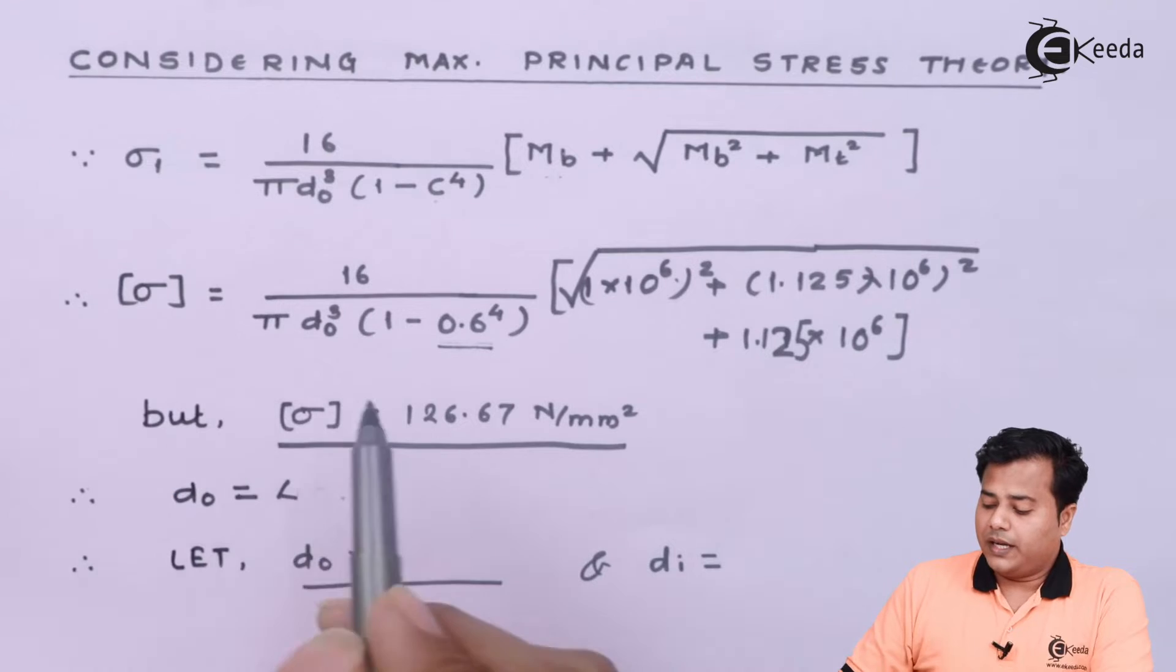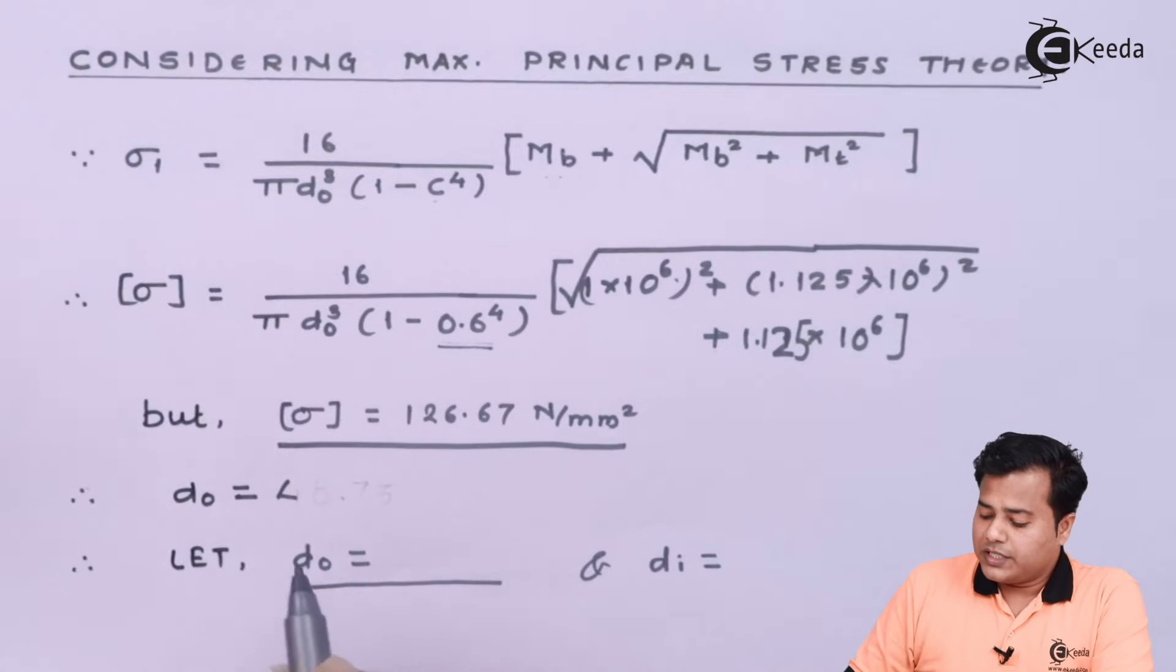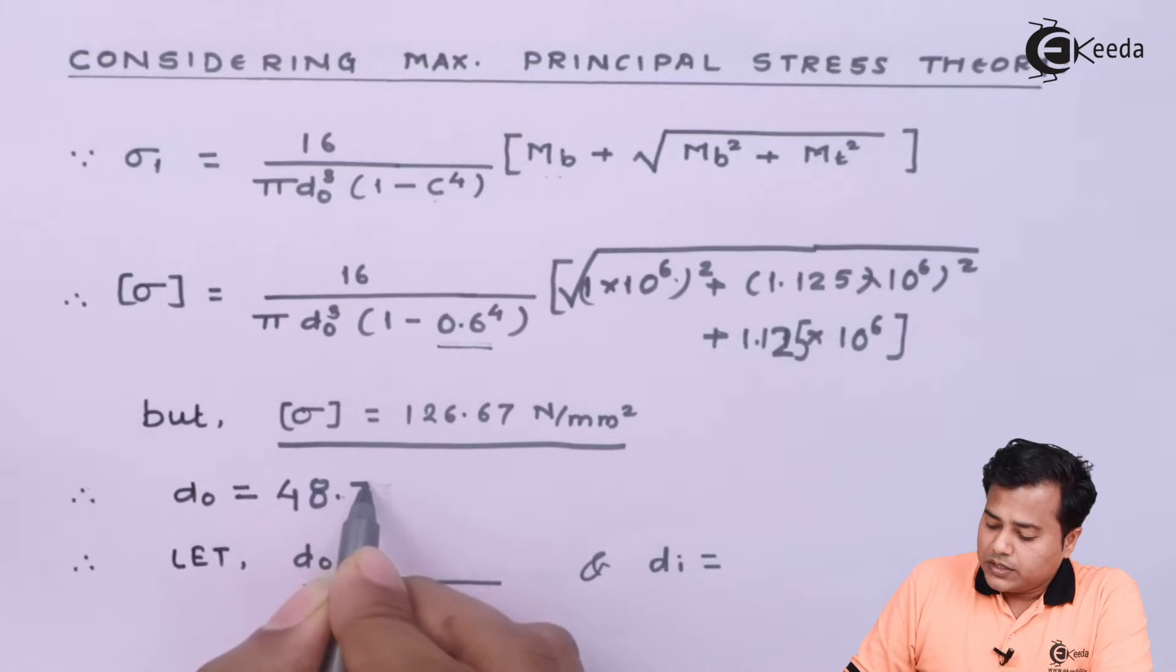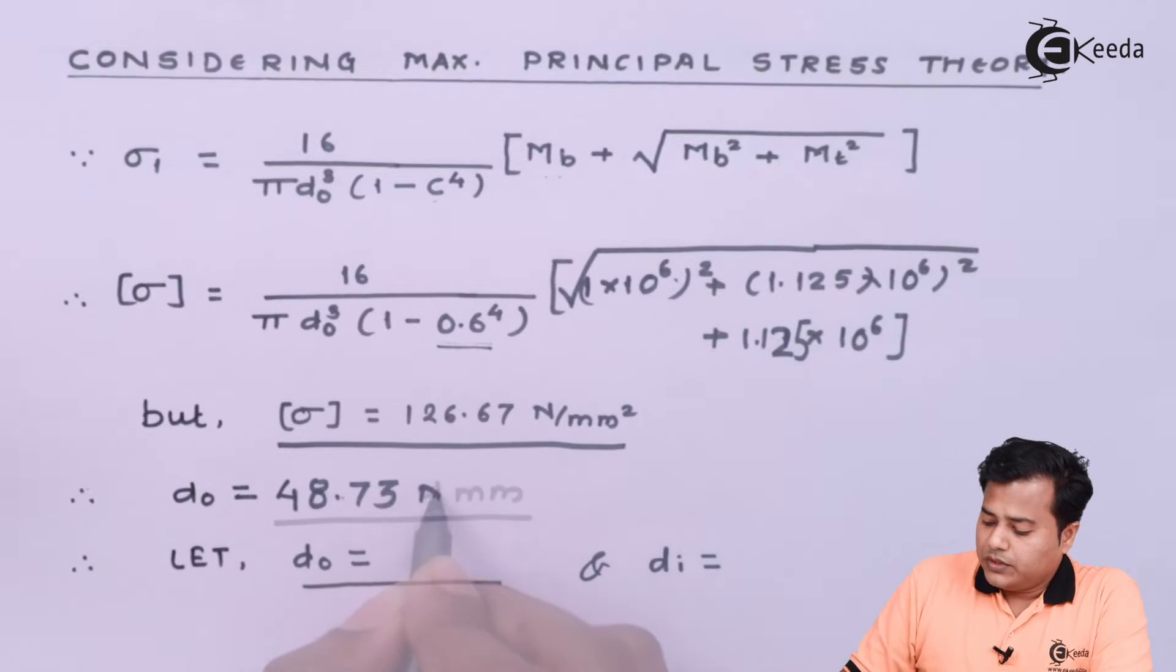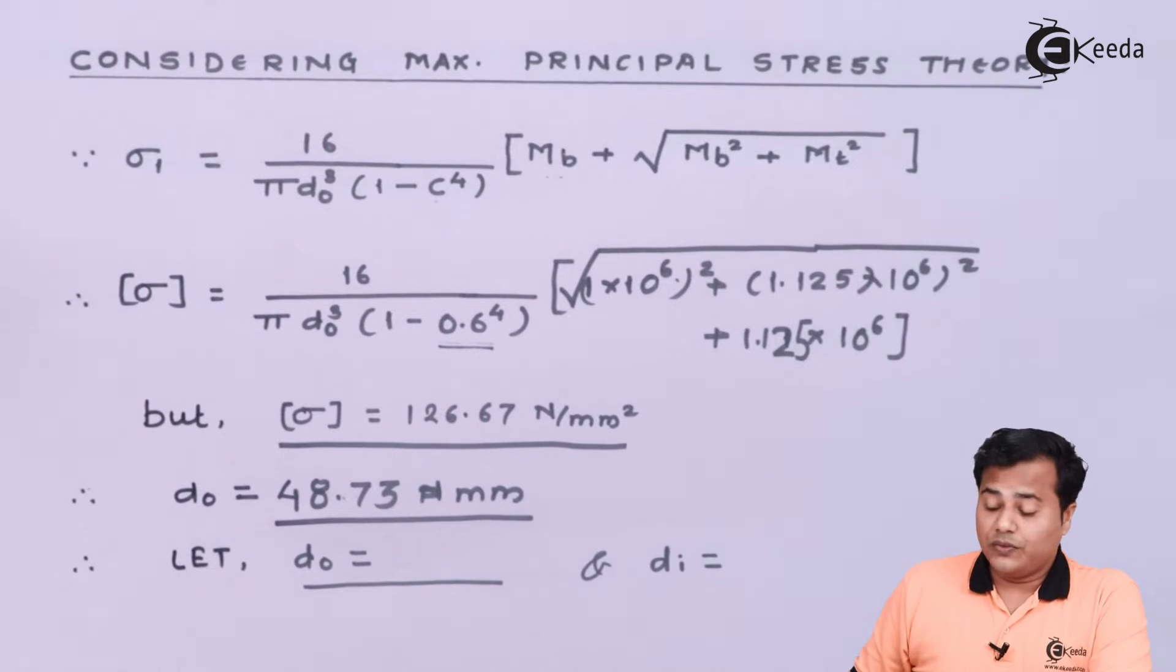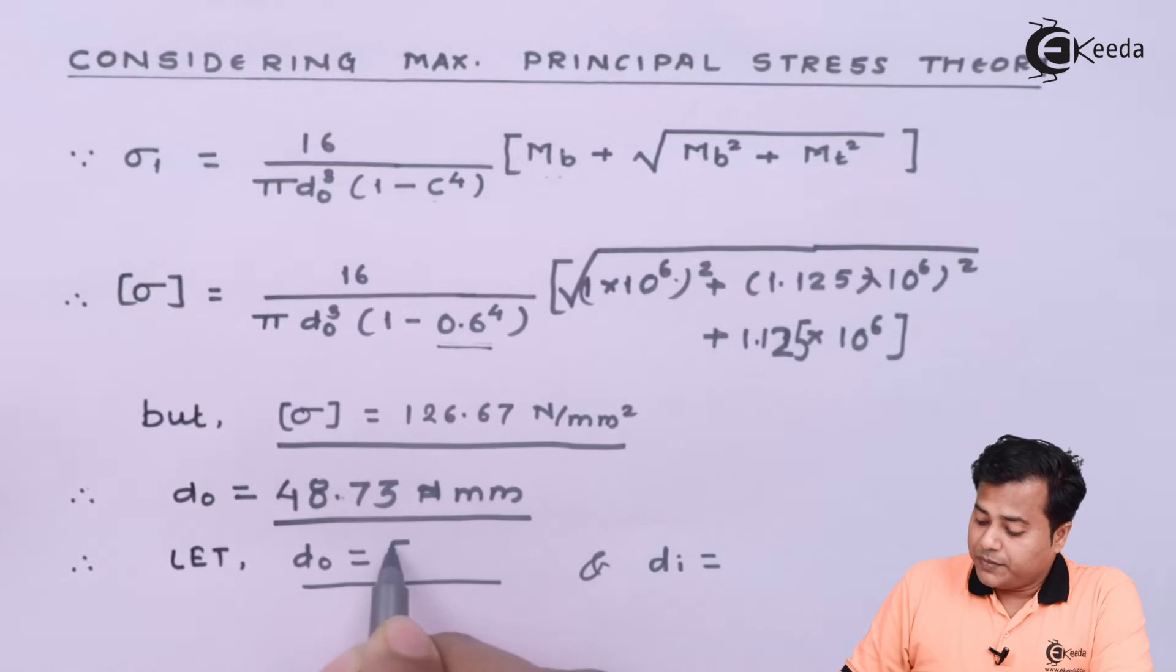If I substitute the value back I will get the unknown. D0 is equal to somewhere equal to 48.73 mm but that is not a preferred series so let us go for the preferred series which comes out to be 50 mm.